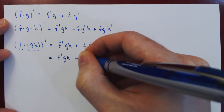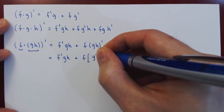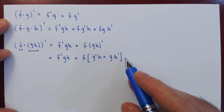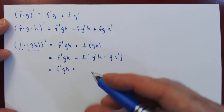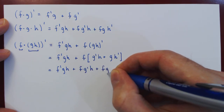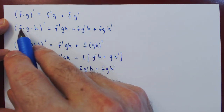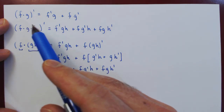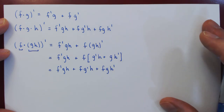Let's re-copy the first term, plus f times the derivative of g times h — and the derivative of g times h is the derivative of g times h, plus g times the derivative of h. And if you notice, this is exactly what we claimed was the extended product rule in the case of three functions multiplied together. As an exercise, you can verify that this idea applies to products between four functions, five functions, and so on. And this is the extended product rule.